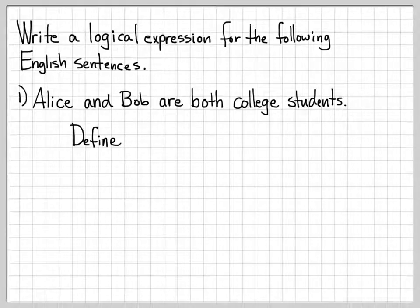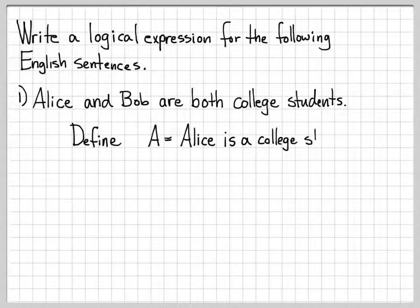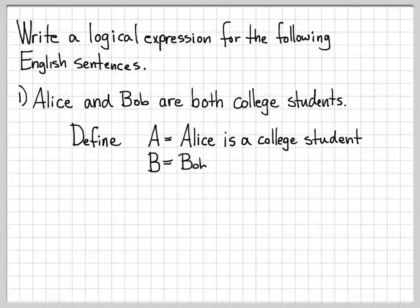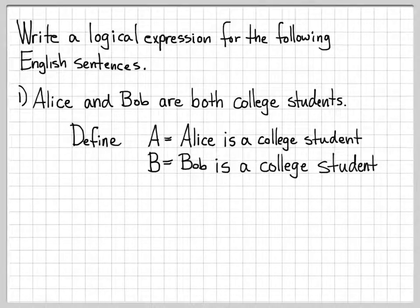We're going to define some quantities. We're going to define the symbol A as the logical statement 'Alice is a college student,' and we're going to define the symbol B as the statement 'Bob is a college student.' Doing this correctly is important. These logical statements have to be able to evaluate to either true or false. So letting A equal 'Alice is a college student' is either a true statement or a false statement.